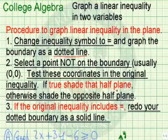If it's true, then we're going to shade that half plane. Otherwise, we're going to shade the opposite half plane. If the original inequality includes equal as our third step, we're going to redo your dotted boundary as a solid line.